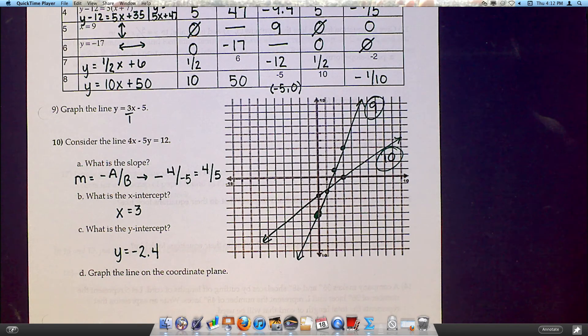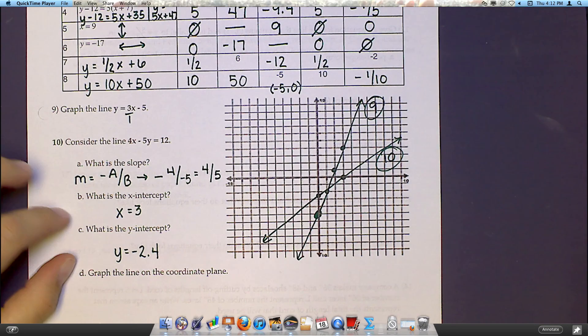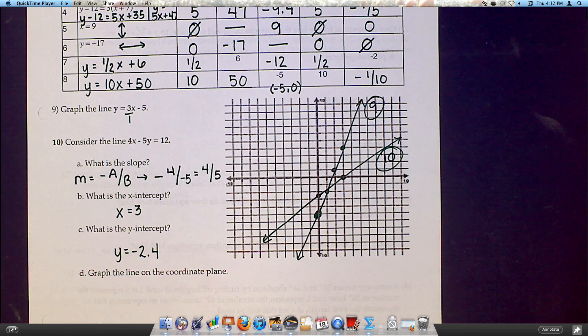So the easiest way to graph, if you have the intercepts all figured out already, is just to plot those two points on the graph. I will start the second page in the next video.